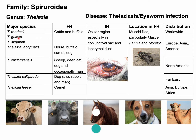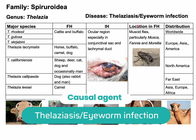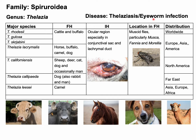The major species that cause telagiosis or eyeworm infection in various animals are listed here. Telagia rhodesi, Telagia gulosa, and Telagia scatjavini are commonly found in cattle and buffalo. Telagia rhodesi can also be found in sheep and goat. Telagia lacrimalis is mostly found in horse, but can also be found in buffalo, camel, and dog.